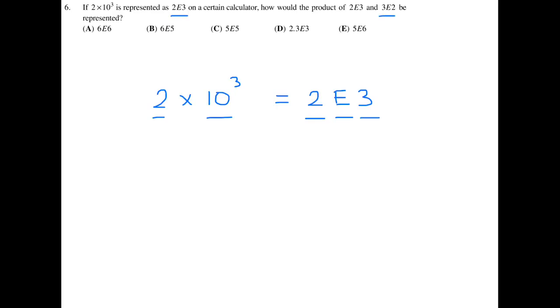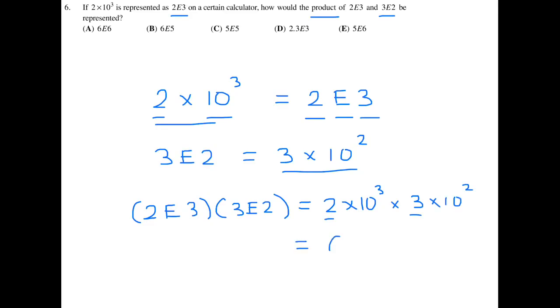If you have 3E2, following the same principle, it's most likely 3 times 10 to the exponent 2. What they're saying is if you have 2E3 and multiply it by 3E2, what are you going to get? That's what the product means, multiplication. 2E3 is 2 times 10 to the 3, and we're multiplying it by 3E2, which is 3 times 10 to the squared. This looks like 2 times 3, which is 6, and 10 to the 3 times 10 to the 2, you add the exponents, so that would be 10 to the 5. If we put it in our calculator format, it would be 6E5. The answer here is B.